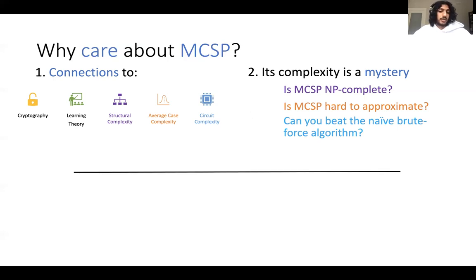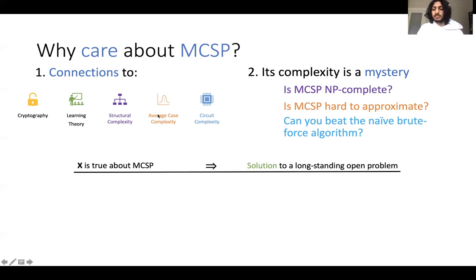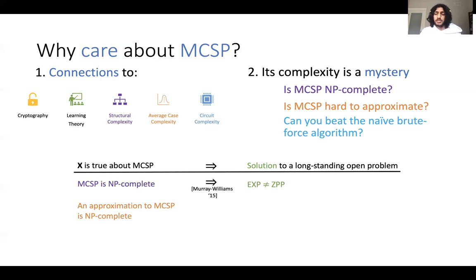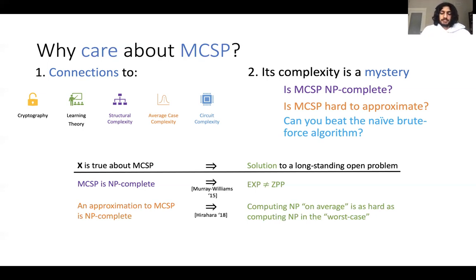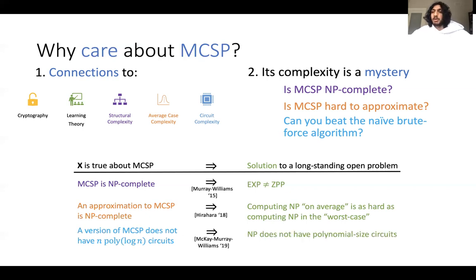What we do know is that answers to these questions would have significant ramifications for structural complexity, average-case complexity, and circuit complexity. For example, if MCSP were NP-complete under polynomial-time many-one reductions, we'd get a breakthrough complexity class separation. If an approximation to MCSP is NP-complete, then by a theorem of Hirahara, we get a worst-case to average-case reduction. And if MCSP doesn't have super-efficient circuits for some specific version, you get a powerful lower bound — like NP not having polynomial-size circuits. This is a hardness magnification phenomenon: a weak-looking lower bound on a specific problem implies a really strong lower bound on a whole complexity class.